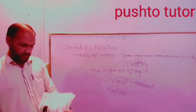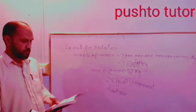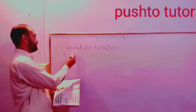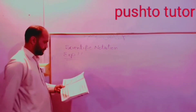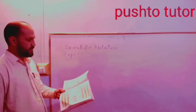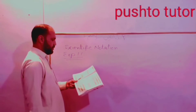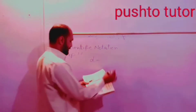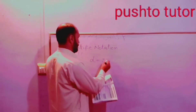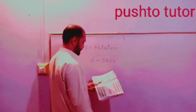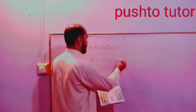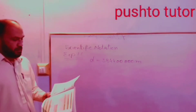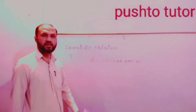Example 1.1: The average distance between the Earth and Moon is 384,400,000 meters. Write this number in standard form or scientific notation.